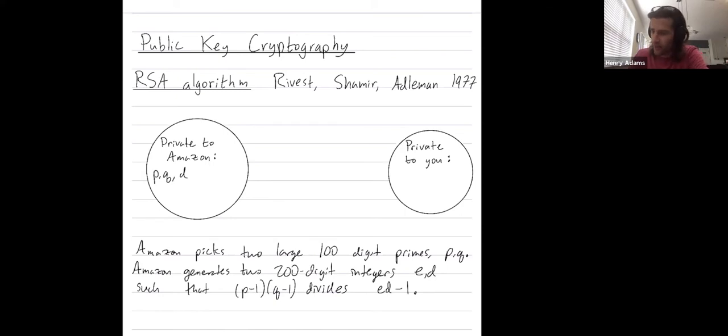And then what is Amazon's public key? Anybody can go to Amazon's web page and get this. They can get E and the product of P times Q. Let me emphasize that all you can get is P and Q multiplied together. You can't get P and Q individually.